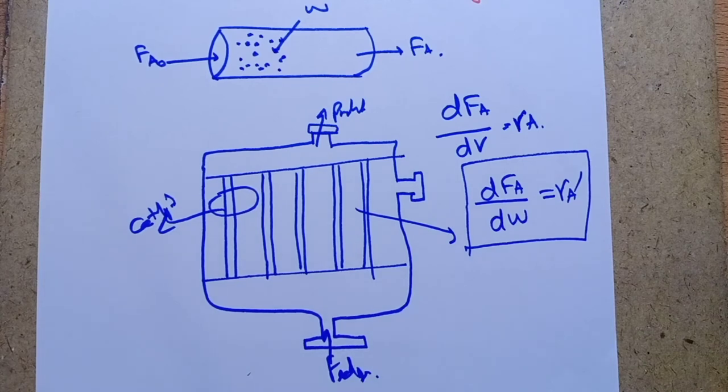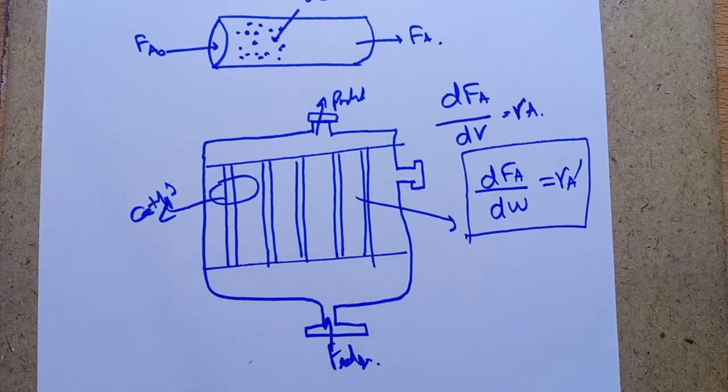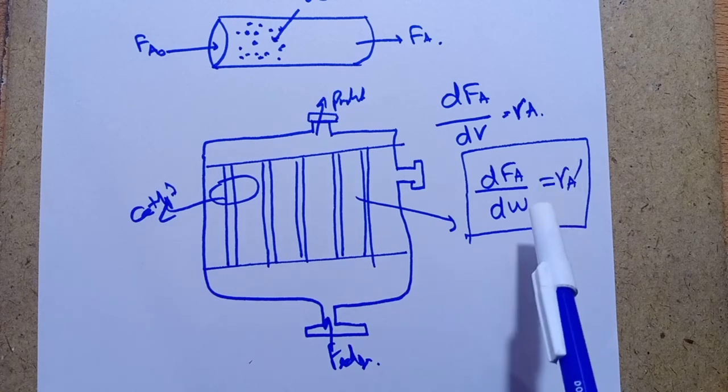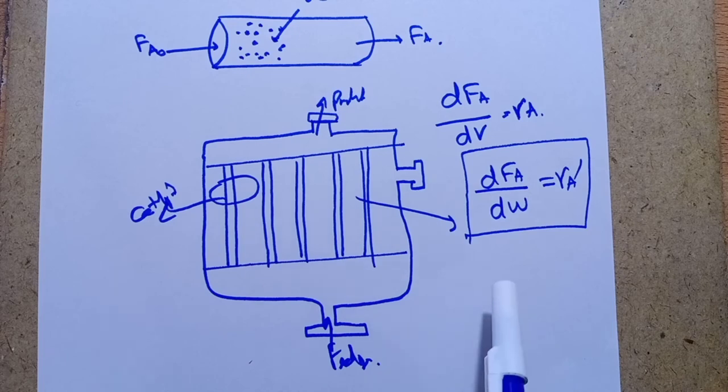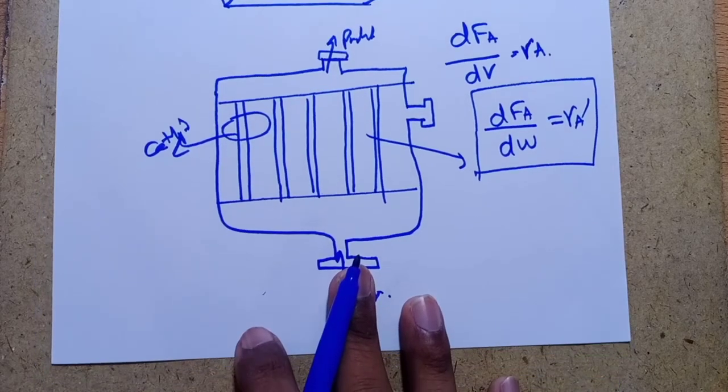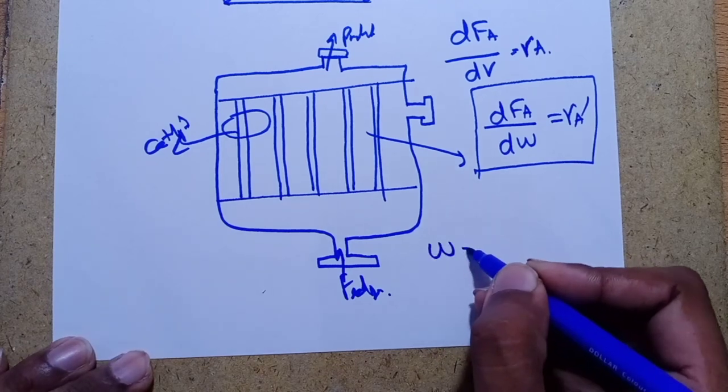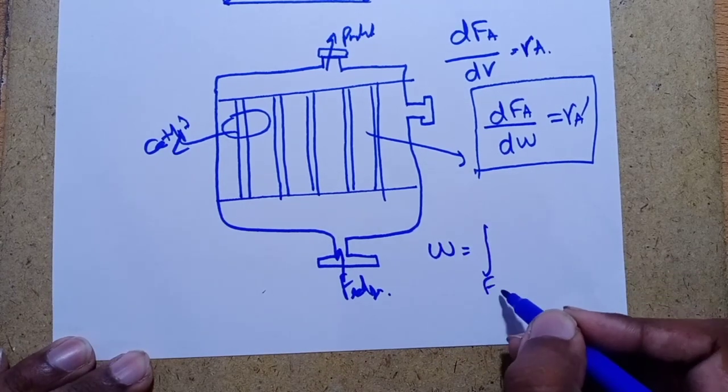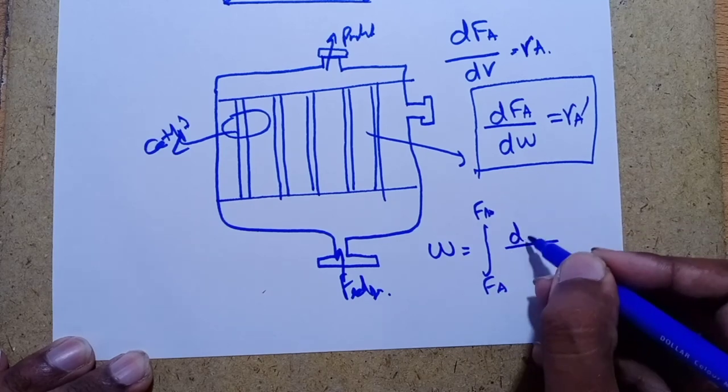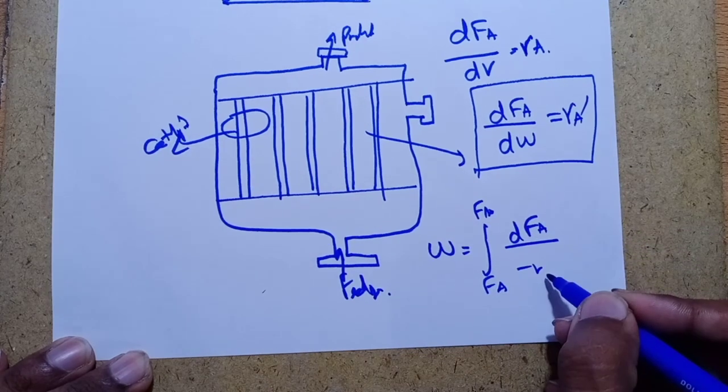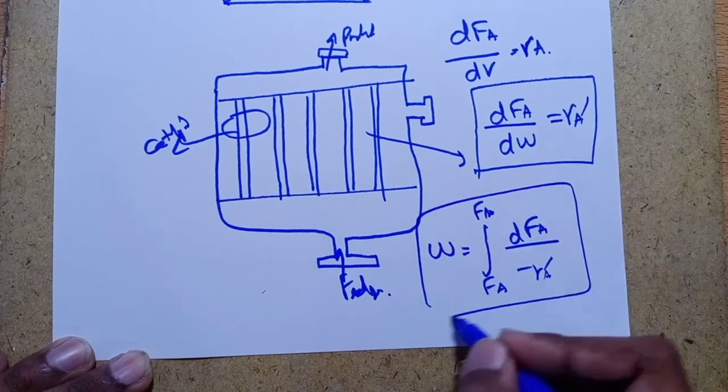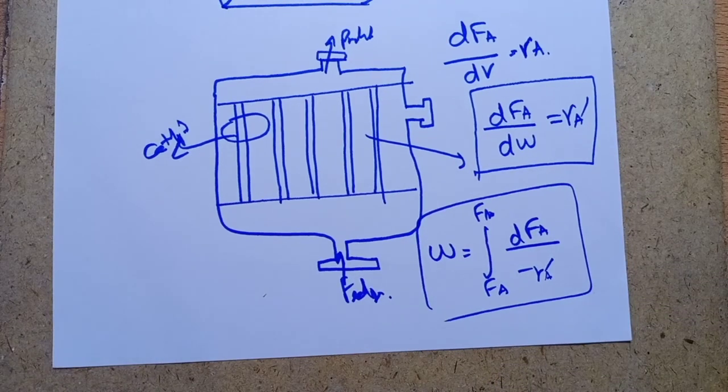This is analogous to plug flow reactor from lecture 8. Here we also talk about mass of catalyst dW. If I show it in differential form, we have mass flow rate FA and FA0. The difference is dFA = RA' dW. This is the differential design equation for PBR. I have explained what it is and its benefits.